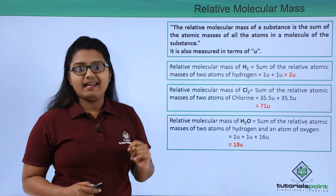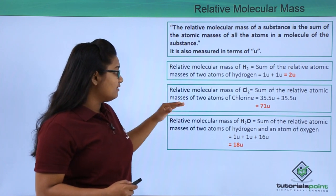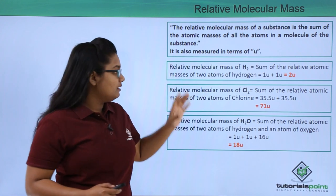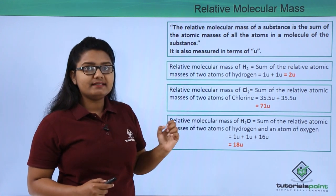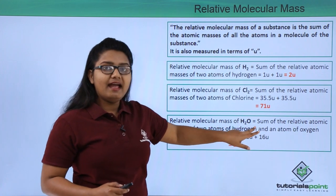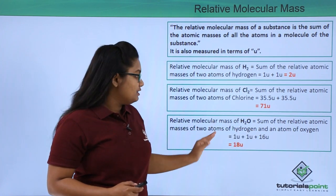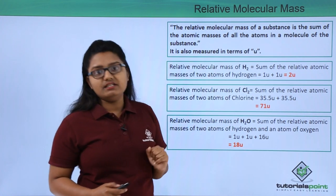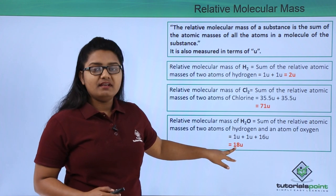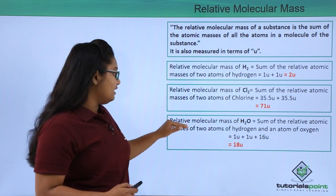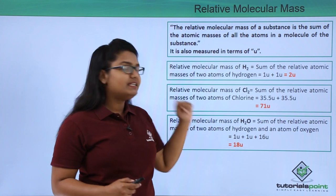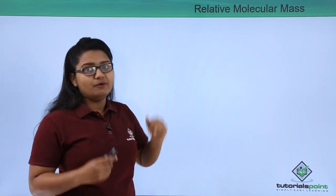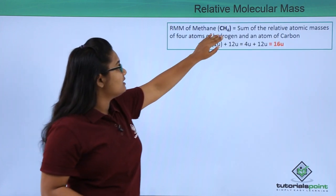A water molecule has two hydrogen atoms and one oxygen atom. To find its relative molecular mass, we sum the relative atomic masses: 1u + 1u + 16u, which yields 18u. Therefore, the relative molecular mass of a water molecule is 18u.